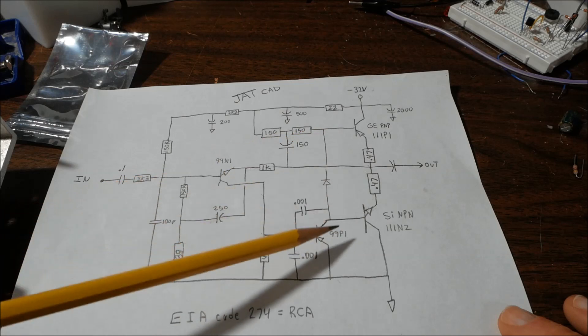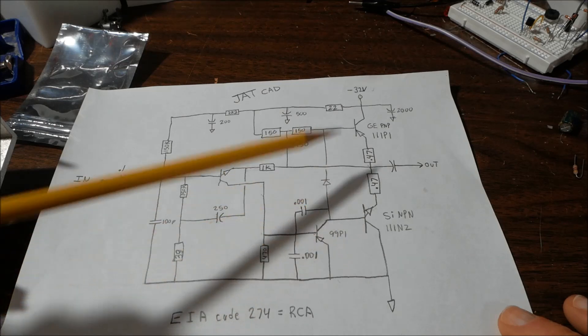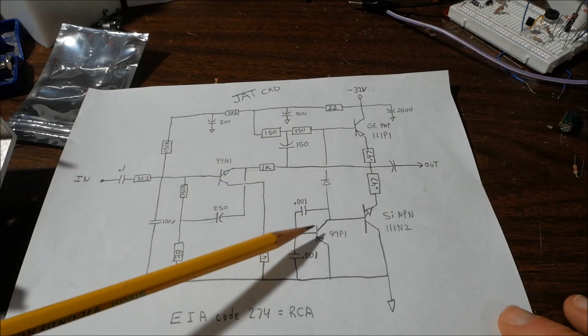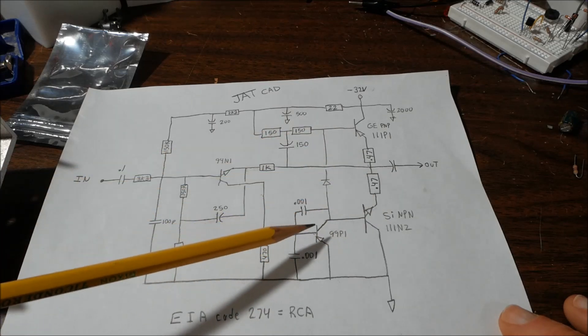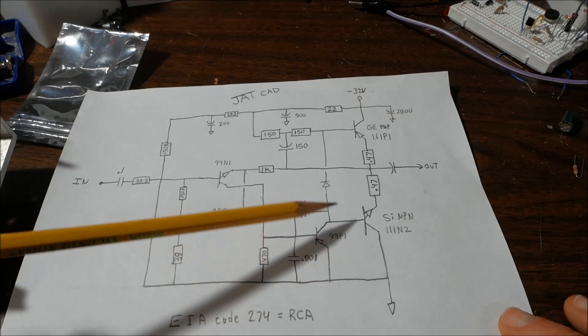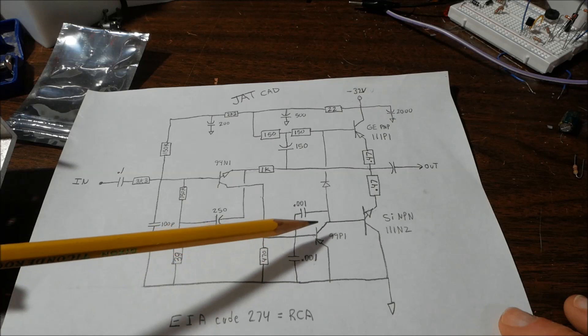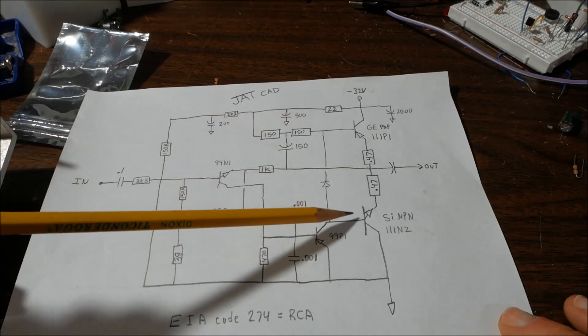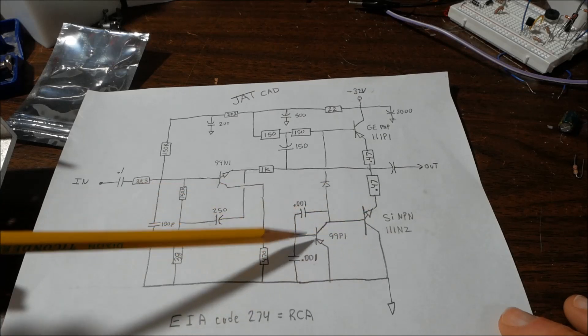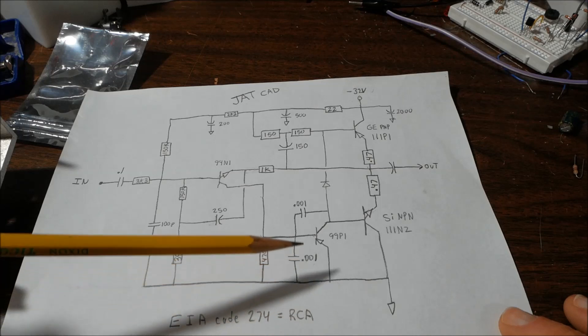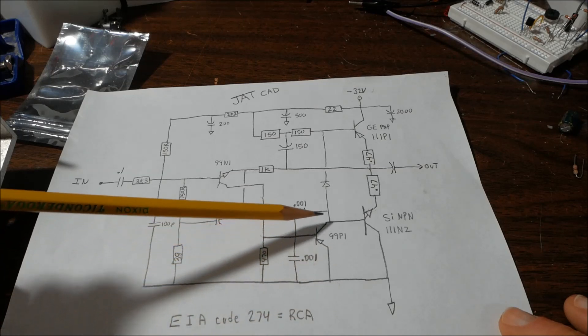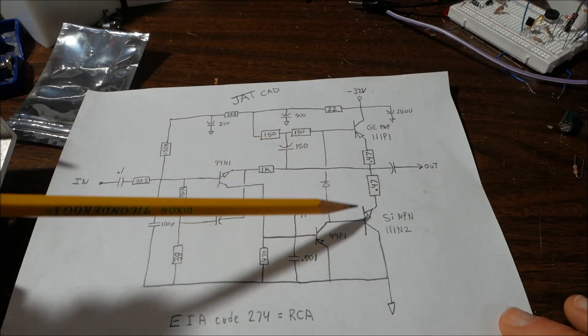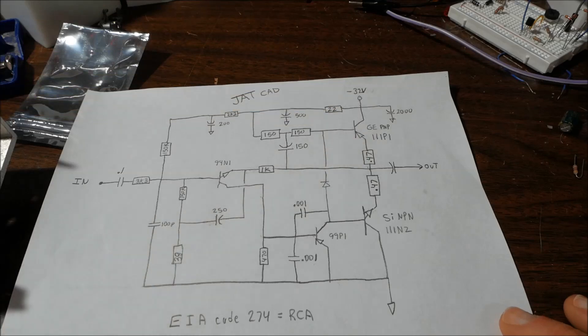A couple other interesting things with this amplifier: you notice there is no Darlington or complementary feedback pair. This transistor here is driving the output. Normally, this is considered the voltage amplification stage, and there'll be a Darlington pair or complementary feedback pair to increase the gain so this stage doesn't have to work as hard.